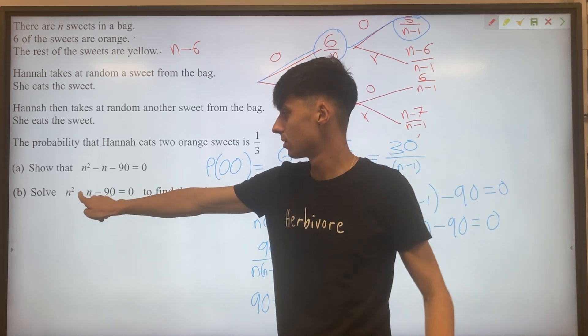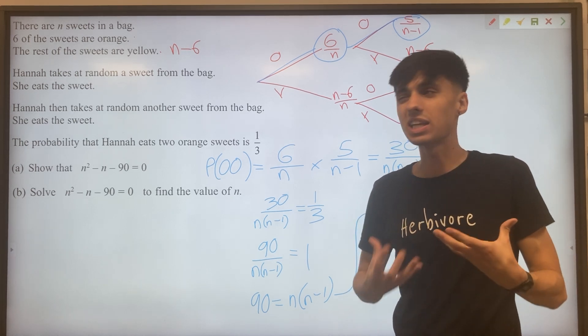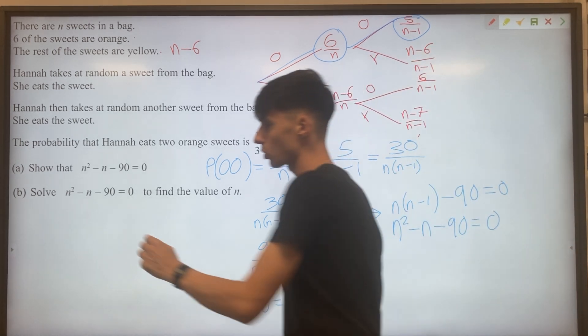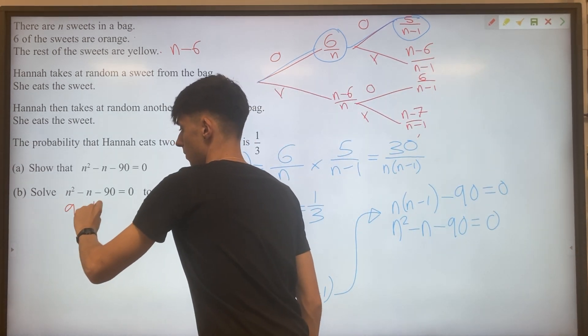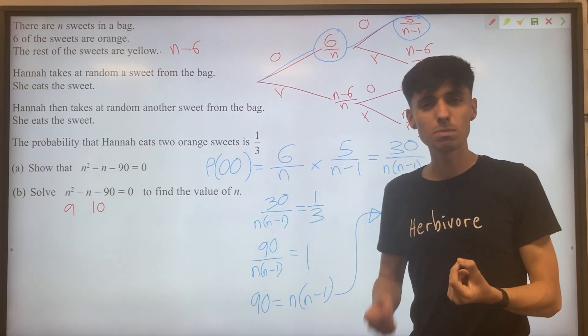We want to find here two numbers that multiply to make minus 90, but add to make minus one. So having a think about those numbers, they need a difference of one. It's got to be something to do with a nine and a 10. And which way round do the minuses have to go?